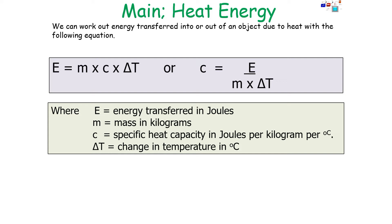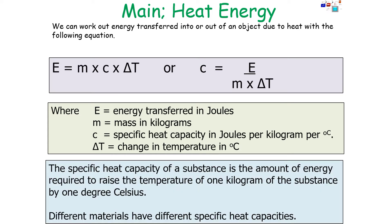Delta T is the change in temperature. We can rearrange this equation so that the specific heat capacity is equal to the energy transferred in joules divided by the mass in kilograms multiplied by the change in temperature in degrees Celsius. Therefore, the specific heat capacity of a substance is the amount of energy required to raise the temperature of one kilogram of the substance by one degree Celsius. Different materials have different specific heat capacities.